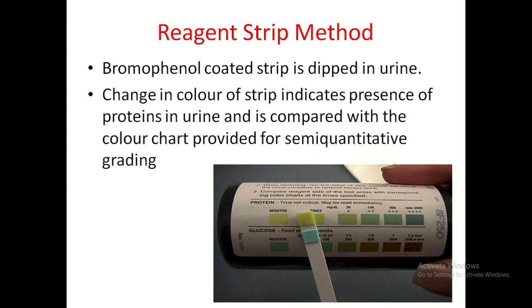The reagent strip method for protein uses bromophenol-coated strips dipped in urine. A change in colour of the strip indicates presence of protein, and is compared with the colour chart provided for semi-quantitative grading — negative, trace, +1, +2, +3, or +4. Urine strips are available with multiple parameters — from 2 parameters up to 10 or 11 parameters nowadays.